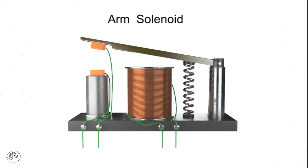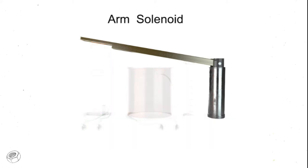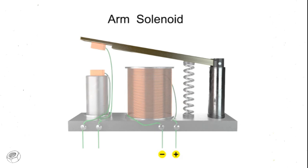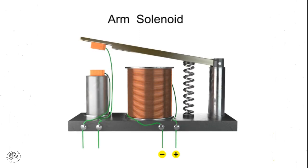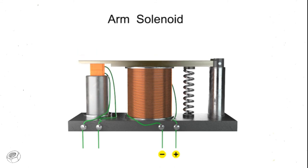Solenoids can also function to control a secondary circuit using a metallic arm. When an electrical current is passed through a coil surrounding a metal core, again a magnetic field is created. In this assembly, the metal arm moves toward the metal core.